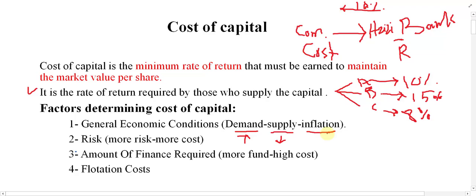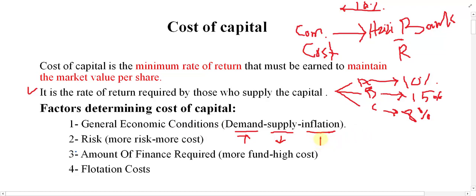The next factor within general economic conditions is inflation. Inflation means an increase in the price of general commodities in the market, or equivalently, a decrease in the purchasing power of currency. If inflation increases, cost of capital also increases; if inflation decreases, cost of capital also decreases.